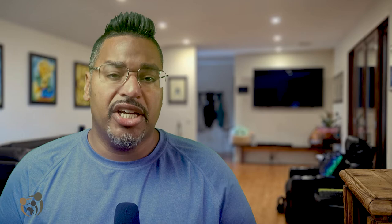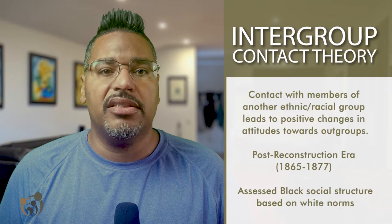Understanding how the notion of race shapes our identities and experiences is essential to understanding racism and discrimination. No single model explains how we develop our racial identities, but here I'll focus on two models: intergroup contact theory and self-categorization theory.